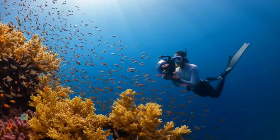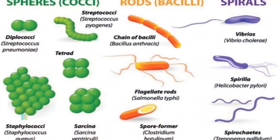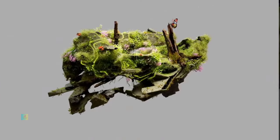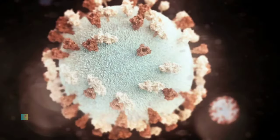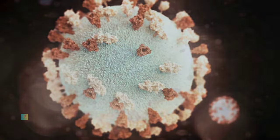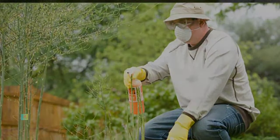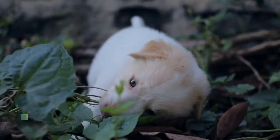Understanding bacterial formation is incomplete without acknowledging the indispensable roles bacteria play in ecosystems. Bacteria are integral to nutrient cycling, breaking down organic matter through decomposition, and forming symbiotic relationships with plants and animals. Nitrogen-fixing bacteria facilitate the conversion of atmospheric nitrogen into a form usable by plants, underscoring their crucial contributions to the balance of ecosystems.